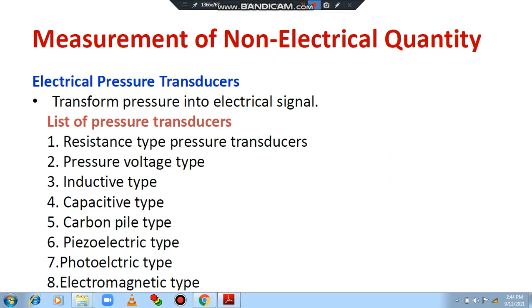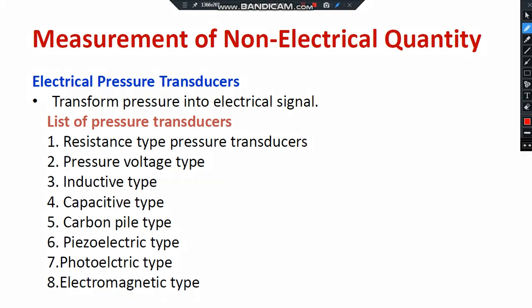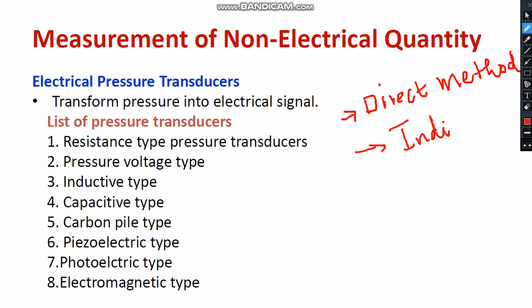There are two types of pressure measurement. The first method is called the direct method, and the second method is the indirect method. In this video, I am going to discuss the different direct methods of pressure measurement. As you can see, there are 10 checklists — these are the different direct methods of pressure measurement. There are a few indirect methods such as ionization bridge and Pirani vacuum gauge. Let me discuss those in a coming session.